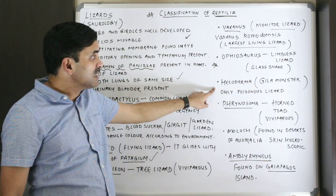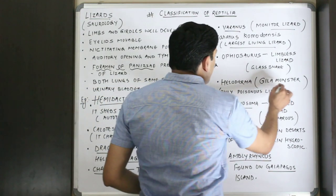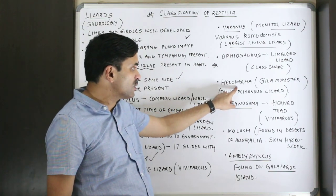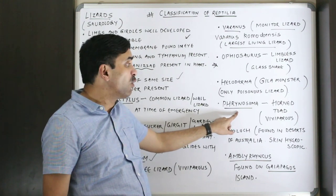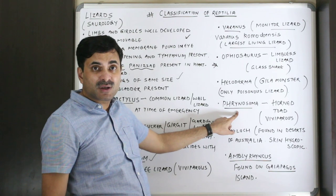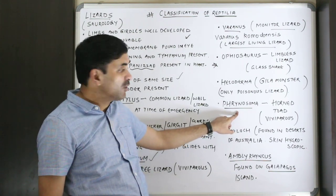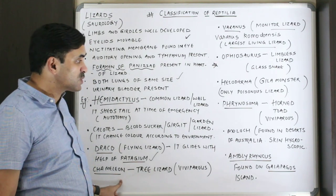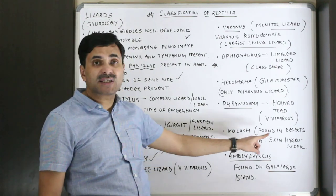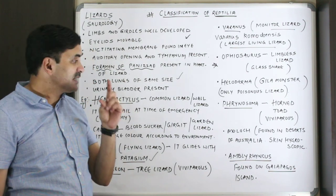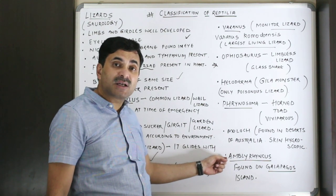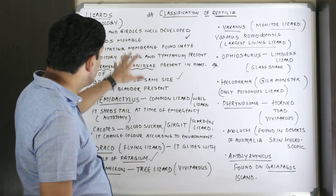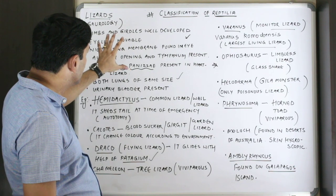Heloderma, known as the Gila monster, is the only poisonous lizard in the world. Phrynosoma is called the horned toad — though it is a reptile, not an amphibian — and is also viviparous. Moloch is found in Australian deserts and has hygroscopic skin. Amblyrhynchus is found on the famous Galapagos Islands.